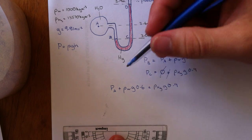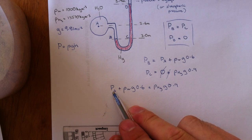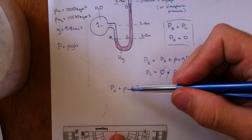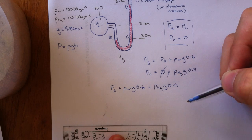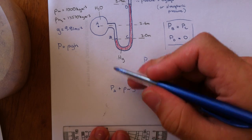Now you can see that we've got one unknown in here and the rest of them are knowns. We know density of water, we know gravitational acceleration, we know density of mercury. We'll just rearrange this to make pressure at A the subject.